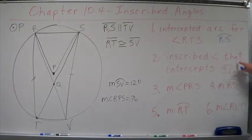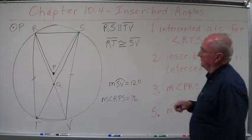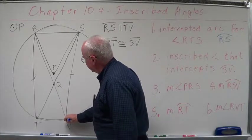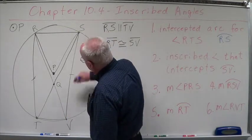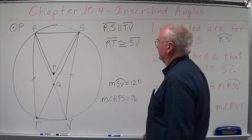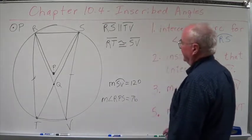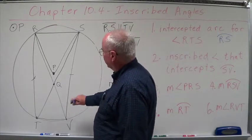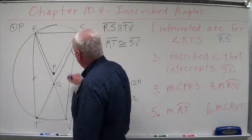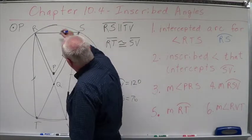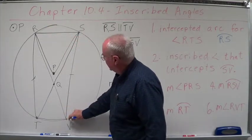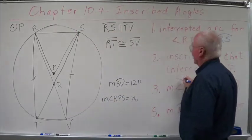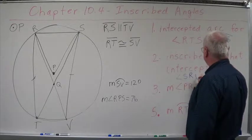The inscribed angle that intercepts SV. Okay, so what inscribed angle? That means it has to end at V and end at S. So some sort of angle that ends at V and ends at S. Well, what do we got? It has to be inscribed, so it means it's got to have all three points on the circle. Well, if we look at SRV, that takes care of, well, that's one. So let's look at angle SRV.